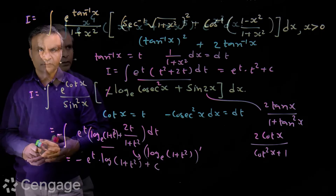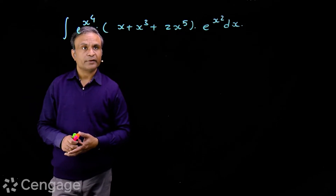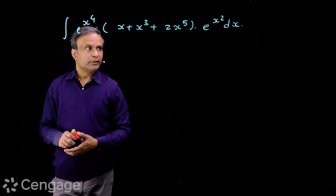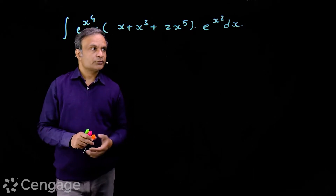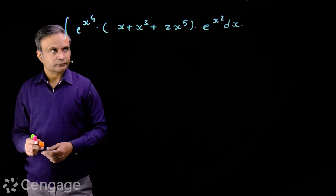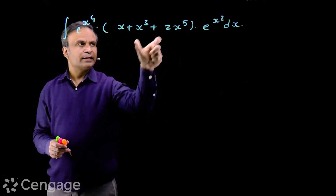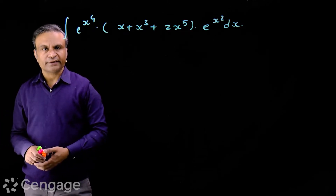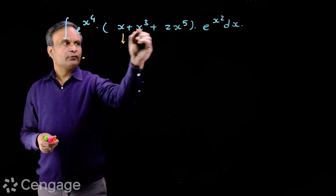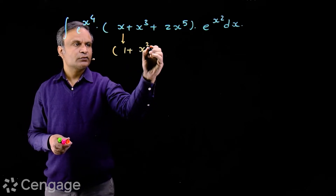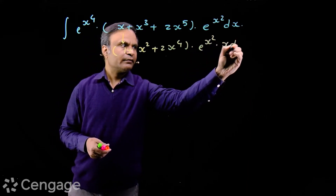Let us try one more interesting question. We have ∫e^(x⁴) × (x + x³ + 2x⁵) × e^(x²) dx. Here we will use substitution. Notice we have even powers x⁴ and x² in the exponentials, and odd powers inside the bracket. We can take x common from the bracket, giving x(1 + x² + 2x⁴) × e^(x²) dx, multiplied by e^(x⁴).